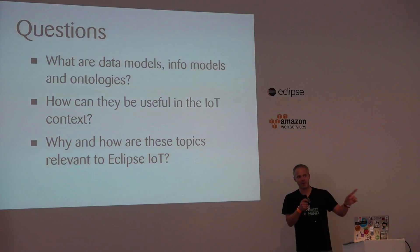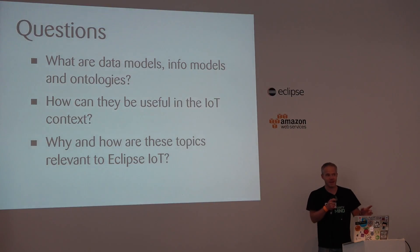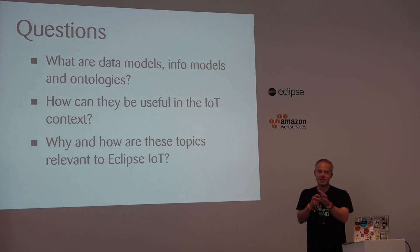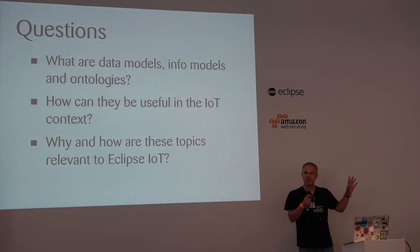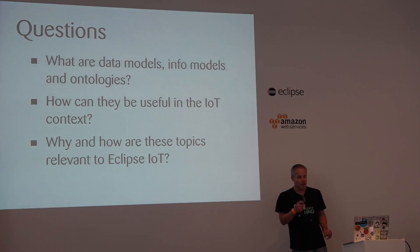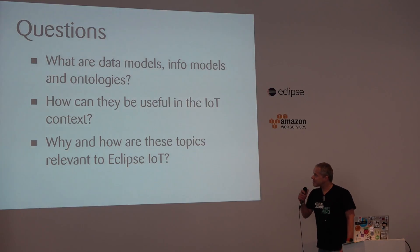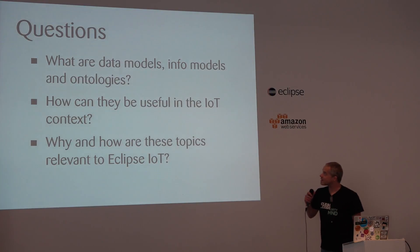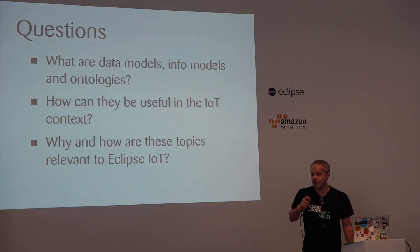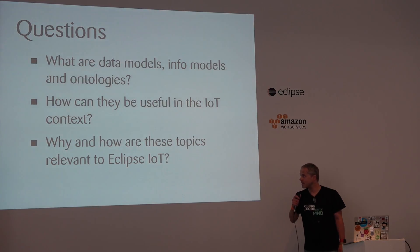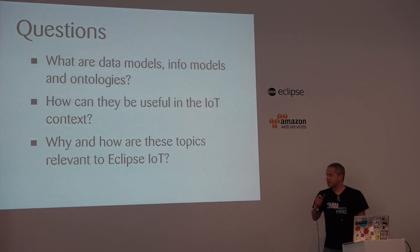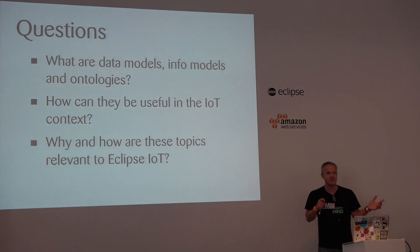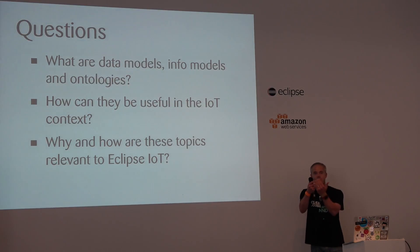I apologize for that because I used to be an academic and I talked about this to students, and essentially as soon as you enter information models and ontologies, that's when people usually start skipping your class. So I'm going to address today: what are data models, information models, and ontologies? How can they be useful in the context of the IoT? And why and how on earth is this related to Eclipse IoT?